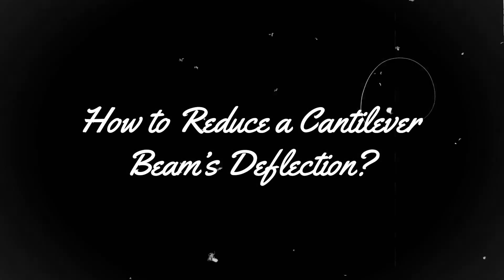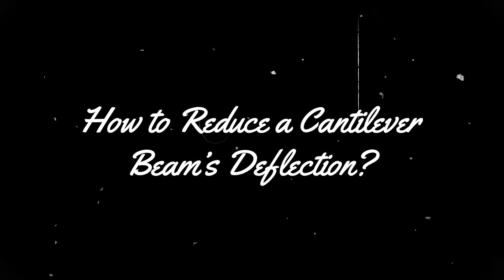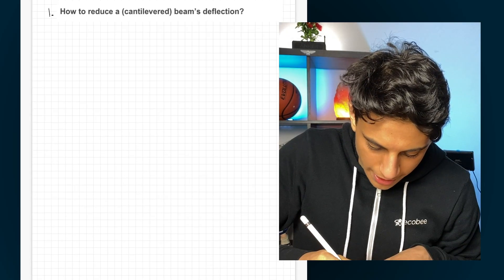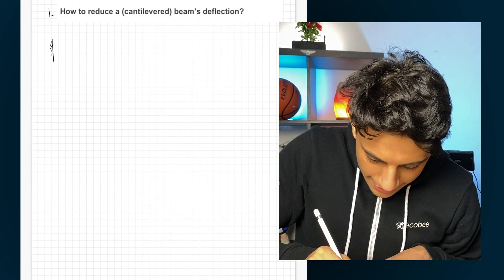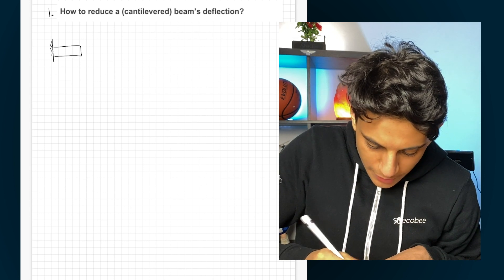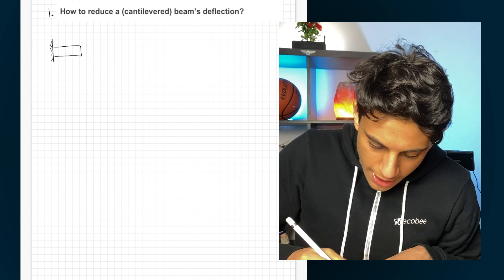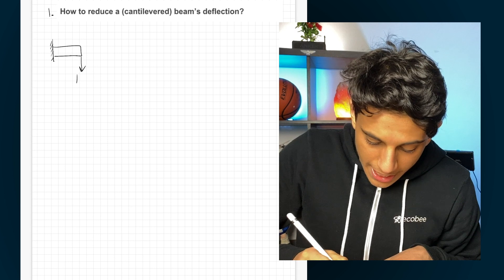The first question we'll be going through is one that has been asked in both of our interviews and it's pretty common. We got this from Glassdoor. It's called How to Reduce a Cantilever Beam's Deflection. We'll start out by drawing that beam — a cantilever beam where one end represents the wall, with a force acting downwards on it.